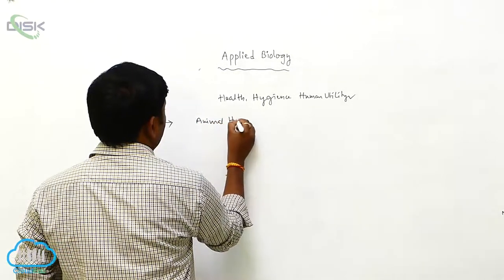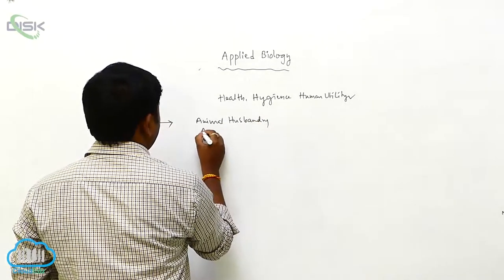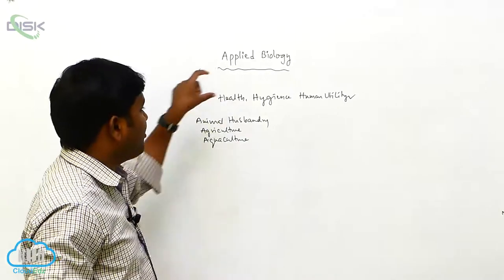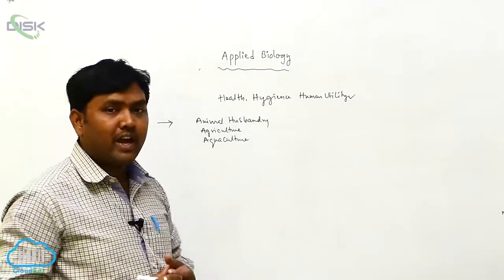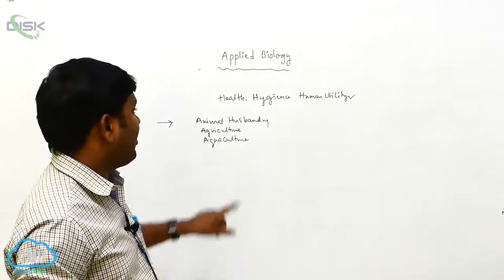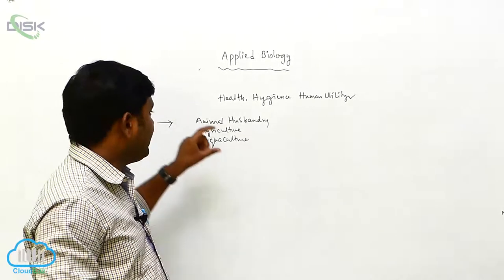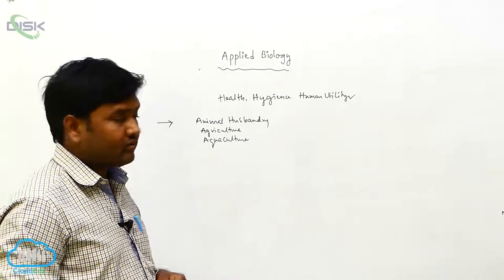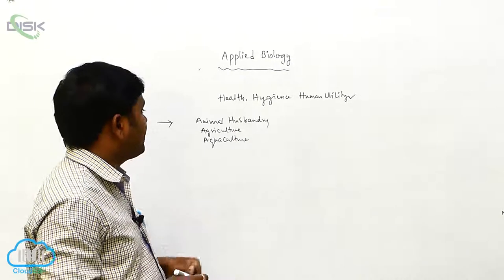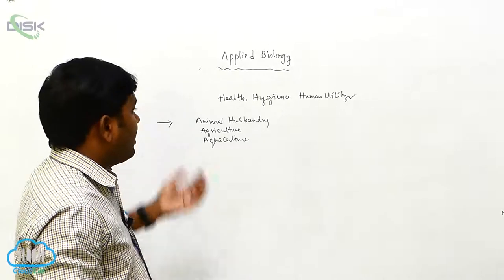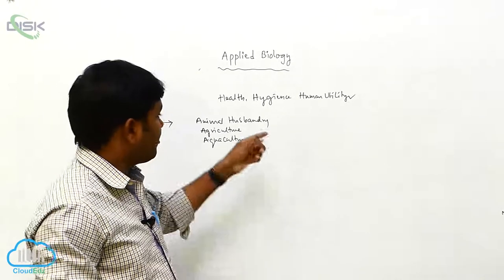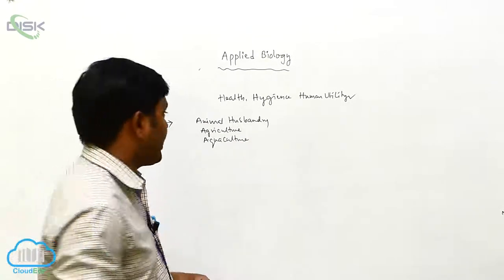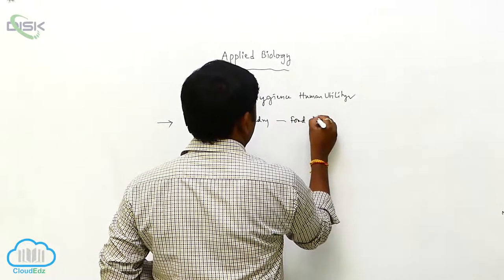In applied biology, biological actions combine with animal husbandry, agriculture, and aquaculture. Animal husbandry plays a major role in increasing food production, and it is one of the key phenomena in applied biology that has contributed vitally to improving food production quality.